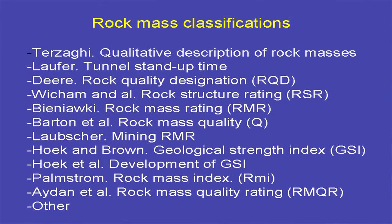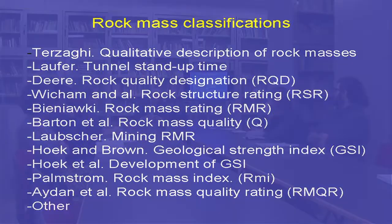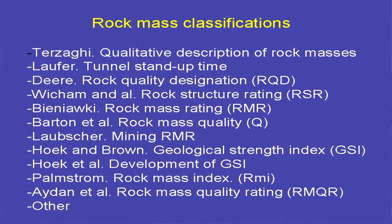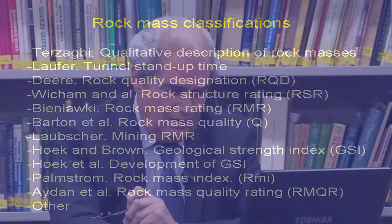Hoek and Brown introduced the Geological Strength Index in the mid-1990s. Together with colleagues and collaborators, the GSI developed to its current form. Palmstrom proposed the Rock Mass Index, and a new rock mass quality rating based on RMR focused on defining properties is being proposed. The majority of these classifications are for other purposes; GSI defines parameters for design rather than going directly to an empirical design.